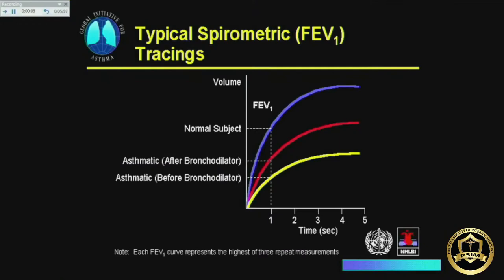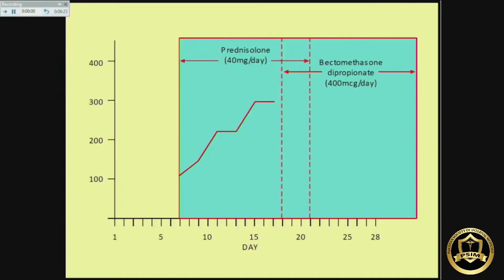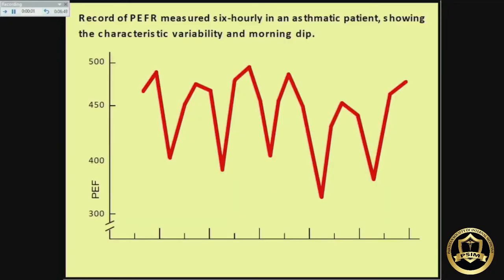Spirometry shows the same thing but costs two to three lakh rupees — you can do the same with a peak flow meter. Check the peak flow; the normal reading is shown in blue. In asthma, due to bronchospasm, it will be low. Give two puffs of a bronchodilator like salbutamol, then check the peak flow again after 10 minutes. If there is a 15 percent improvement from the baseline, you confirm the diagnosis. If patients have already taken bronchodilators, give them inhaled or oral steroids, check before and after seven to ten days, and you will again find reversibility.